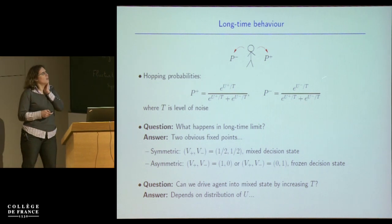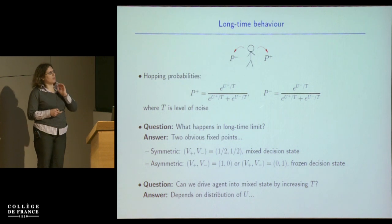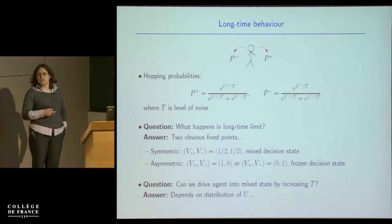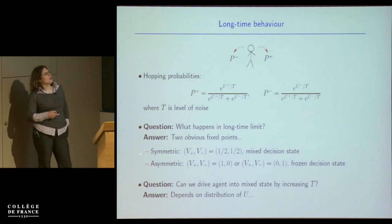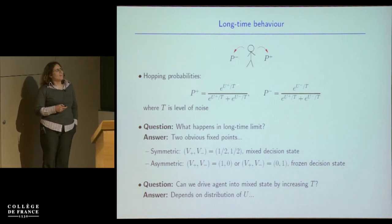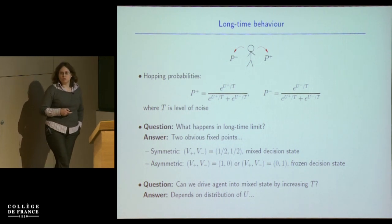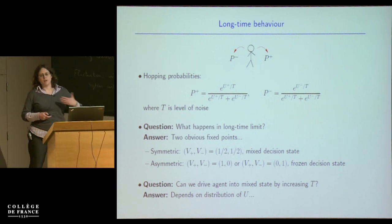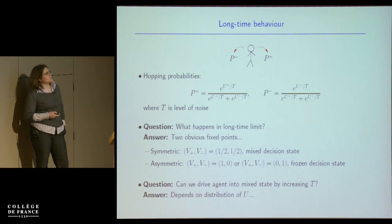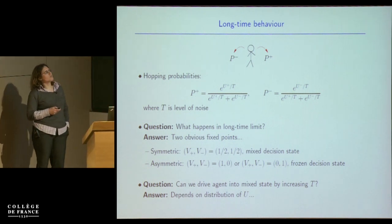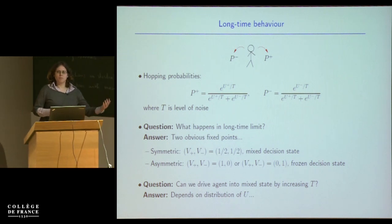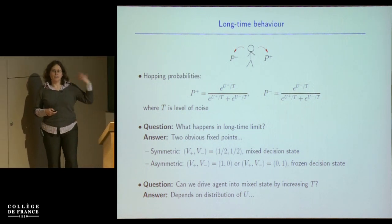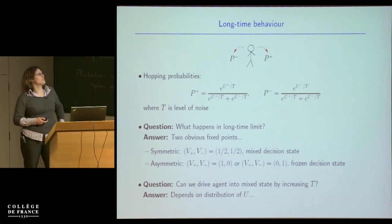So we have a random walker who goes right or left with probabilities P plus and P minus, where the capital T in the formula is sort of the level of noise in the decision — or in a physics analogy, the temperature. If T is very big, U plus and U minus don't matter much and both probabilities are approximately a half, like an ordinary symmetric random walker. If T is small, there's a bias in the direction of whichever is bigger, U plus or U minus — a kind of positive feedback saying: I'm more likely to go in the direction where I had a better experience in the past.